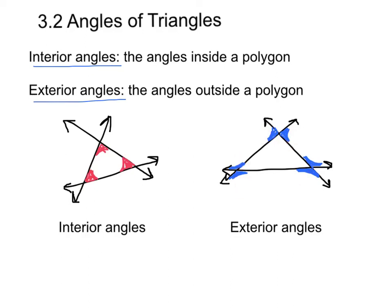Notice that the angles touch the polygon. So right here, this red arrow is showing you these three angles are not exterior because they are not touching the exterior of the polygon. Exterior are the angles outside. Interior are the angles inside.